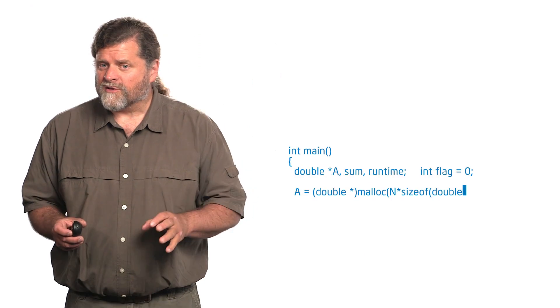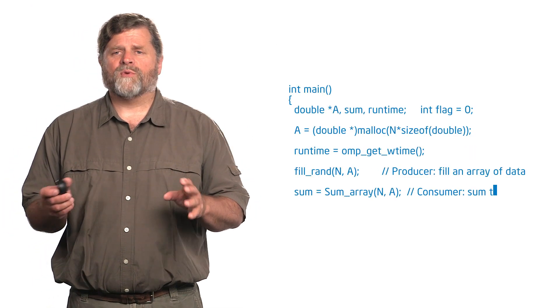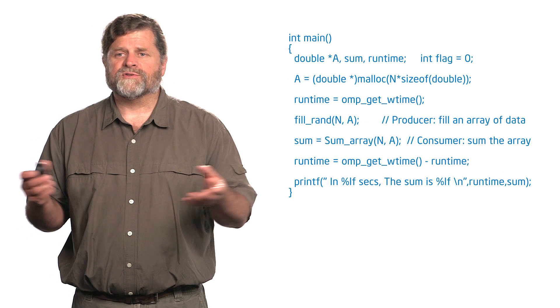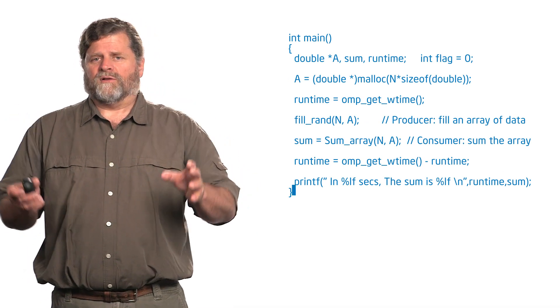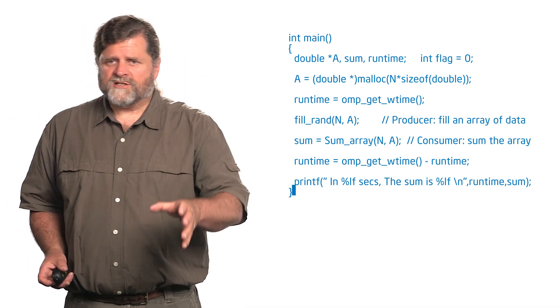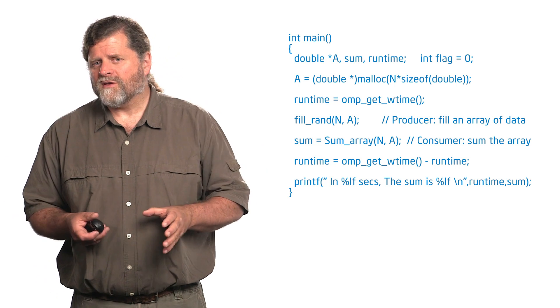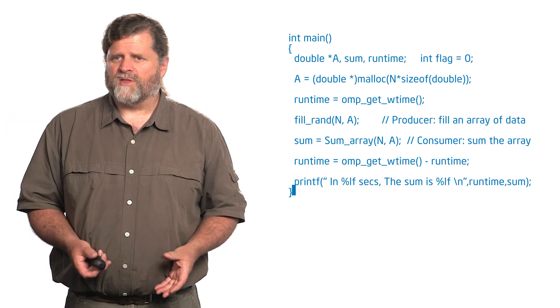This is getting into some advanced stuff here, so bear with me. The code in particular that we worked with inside that file prod_cons.c, producer-consumer, very simple. We have one function that's going to fill an array of random values, another function that's going to sum them.